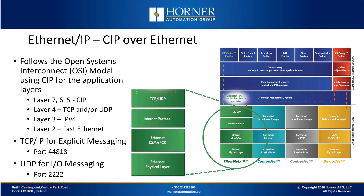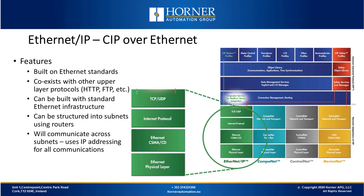Now let's talk about CIP over Ethernet. In the 7-layer Open Systems model, CIP resides at the application layers 5, 6, and 7. Layer 4 is where the transports of TCP and UDP come in. Layer 3 is the IPv4 layer, and layers 1 and 2 are the physical Ethernet layers. There are two ports worth mentioning: port 44818 is used for TCP/IP explicit messaging, and port 2222 is used for UDP IO messaging. This model is built on standard Ethernet and can use standard Ethernet infrastructure components. They coexist well with other protocols and can be structured into subnets using routers, communicates across subnets, and uses IP addressing for all IP communications.